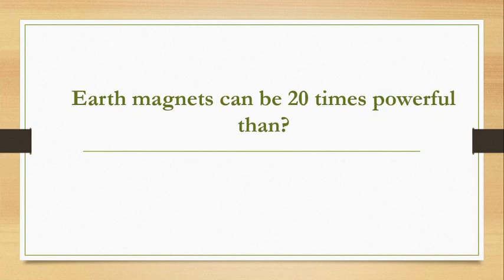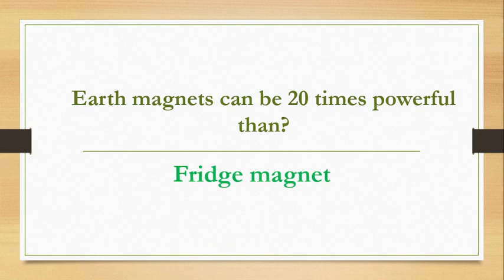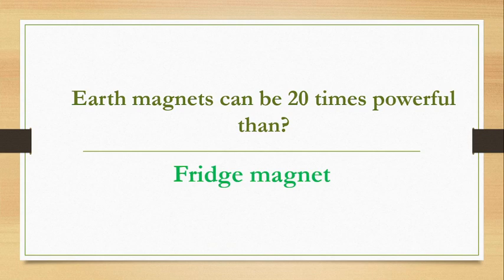A magnet can be 20 times more powerful. The answer is fridge magnet — a fridge magnet is 20 times more powerful than an earth magnet.